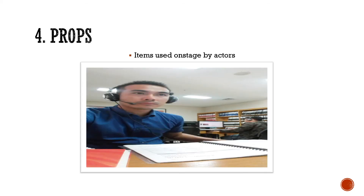Number four is properties. Properties here are items used on the stage by actors. Jadi misalnya beberapa properties atau items asli yang digunakan oleh aktor dalam menampilkan drama. Bisa meja, kursi, table, chair, cupboard, bowl, pan, radio, computer, and so on and so forth. Jadi itu adalah items used on stage by actors.